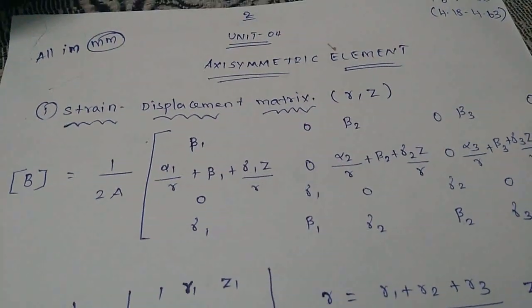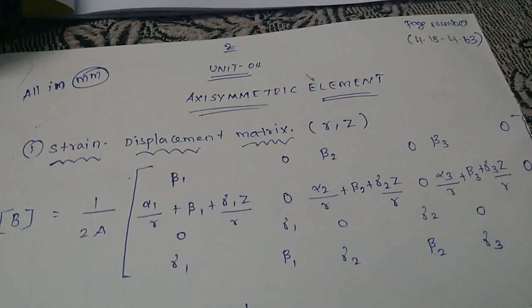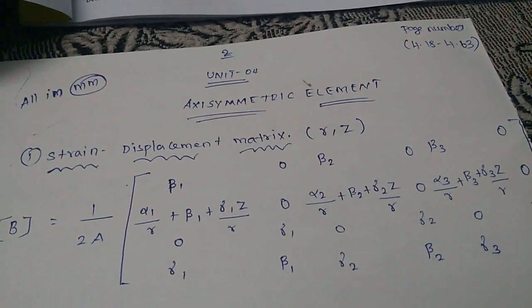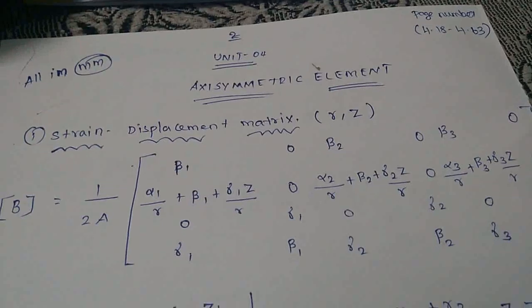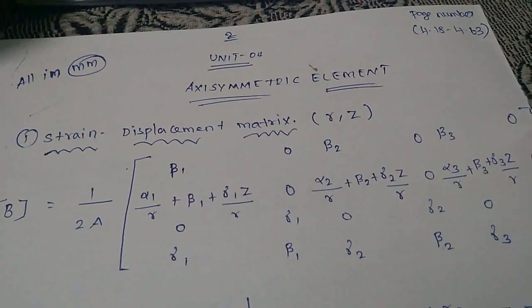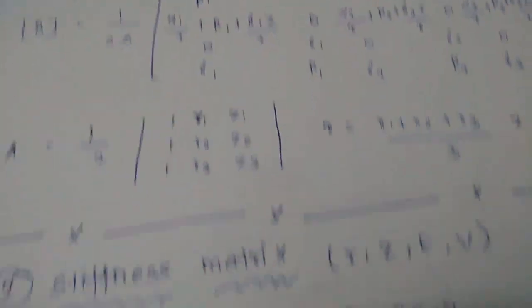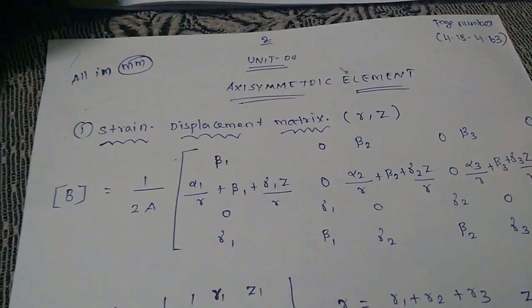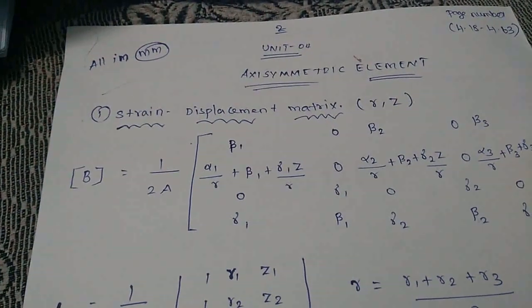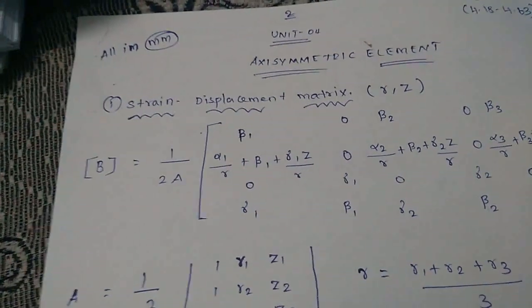The fourth unit is the Axisymmetric Element. This is covered on pages 4-16. There are 3 methods. If you have to use the unit and the paper, you can use the important formulas.